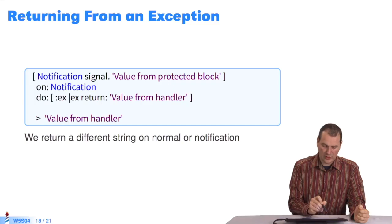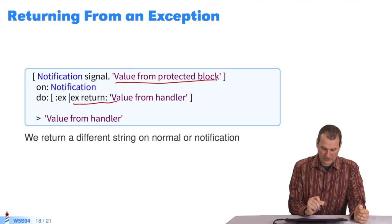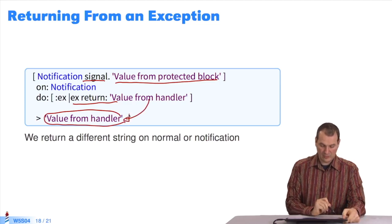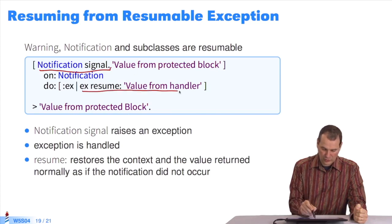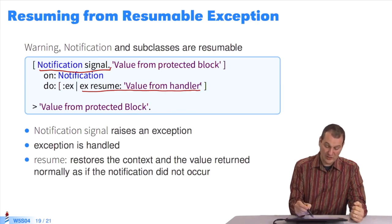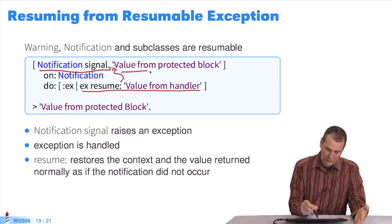To return another value from an exception, you use return — you had your block which gave a value, you raised an exception, and in the end it's the return value that was returned. With resume, you have your exception which is raised at a point, and when you do resume, it's not the return value but the next value — meaning continue after the exception point, start again from there — and that will give you the resumed value.